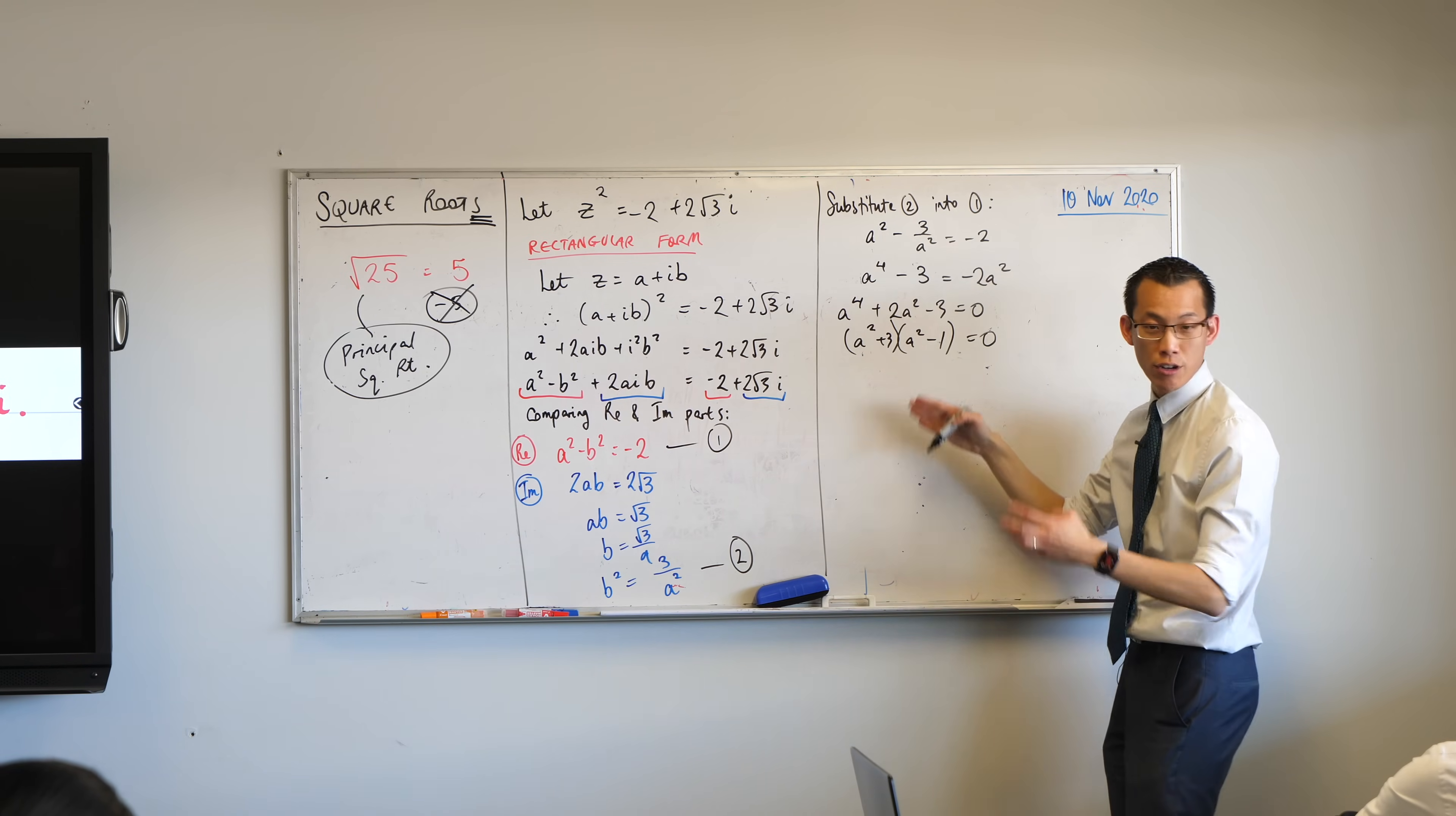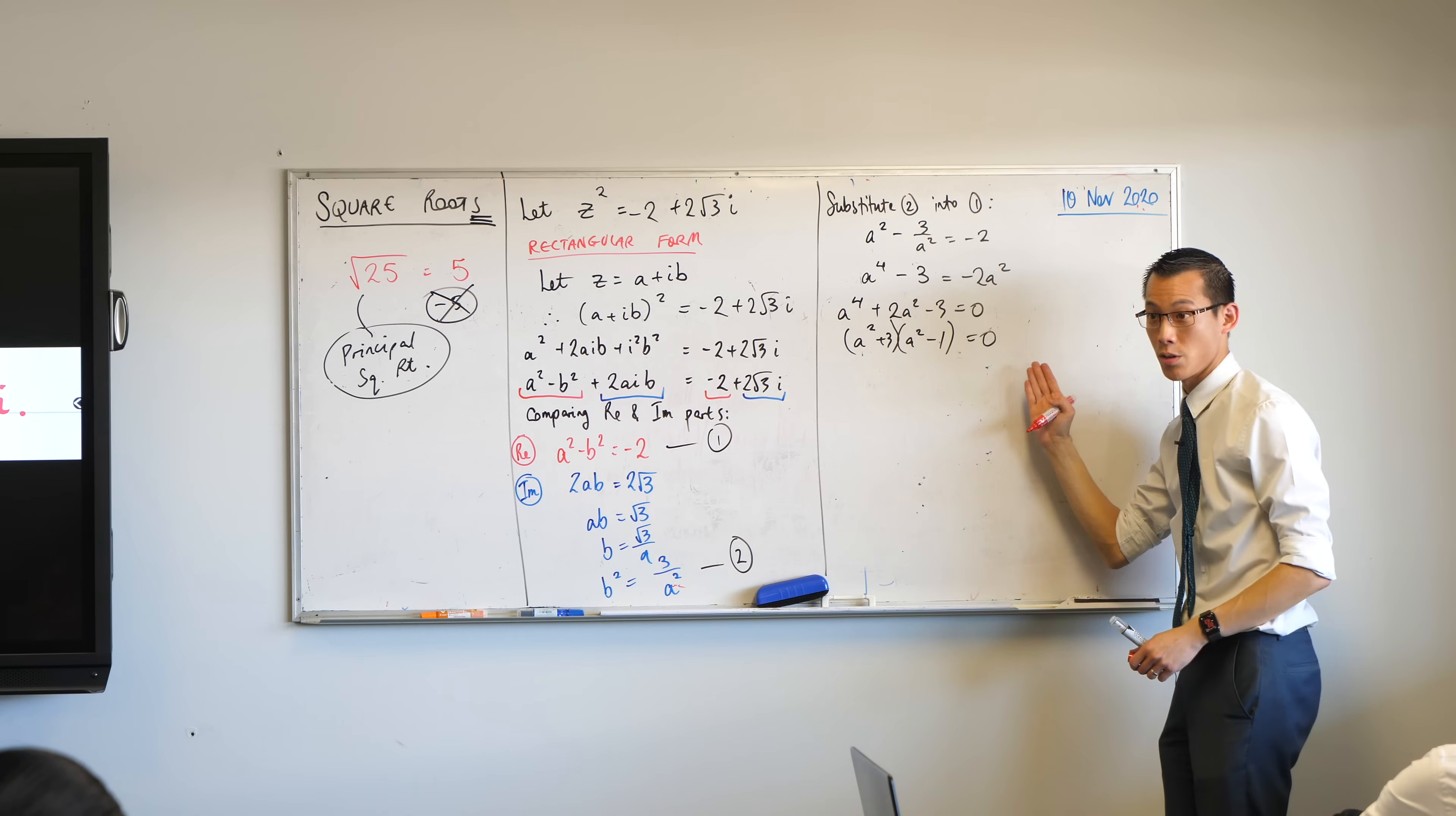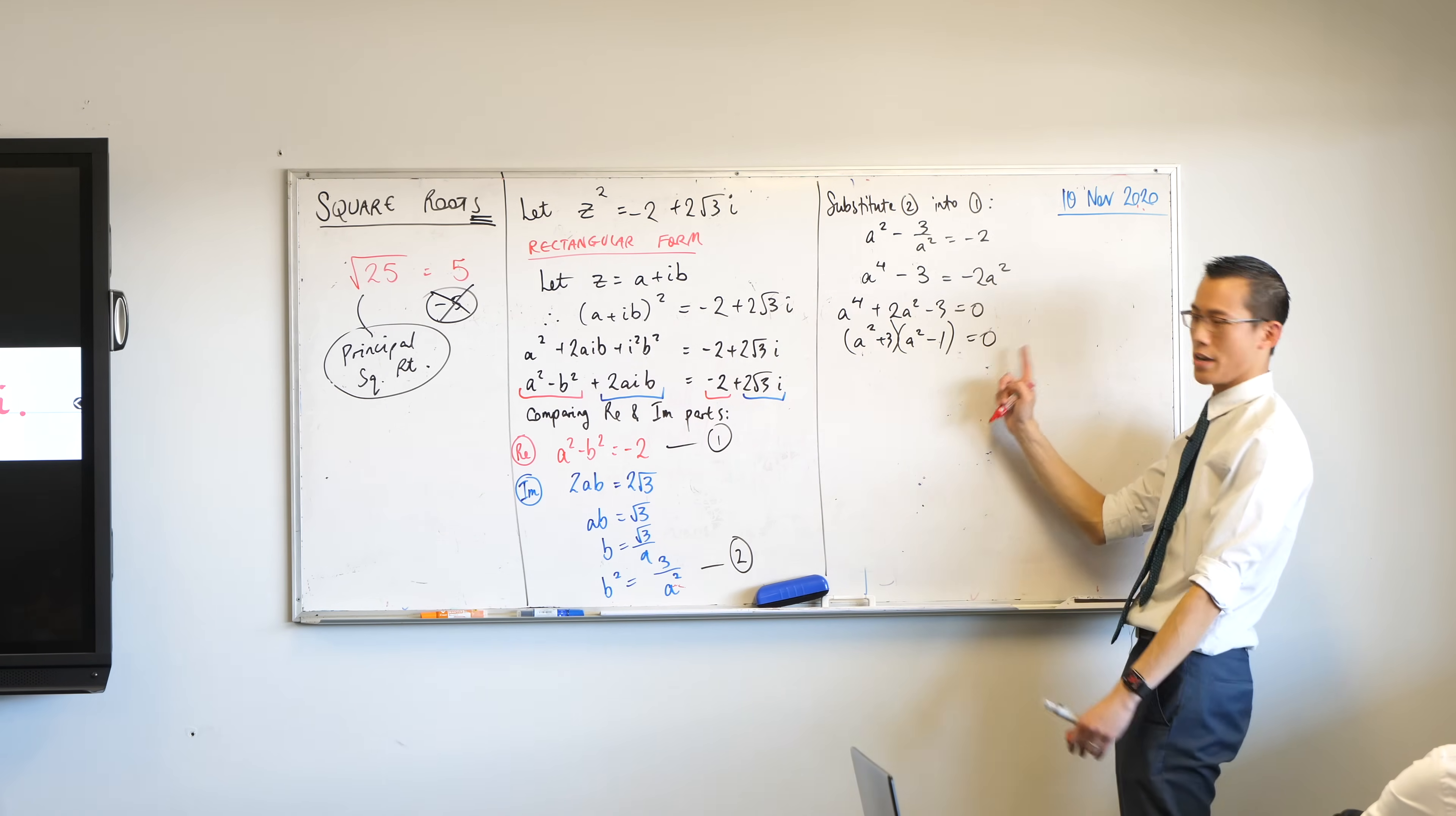Now, I could factorize further if I wanted, but you know what? I'm just going to pause for a moment and just say, what does this mean? If you've got a product between two things and they apparently equal zero, then either one or both of them must be equal zero. Do you agree? Because there's no other way you can get a product of zero.